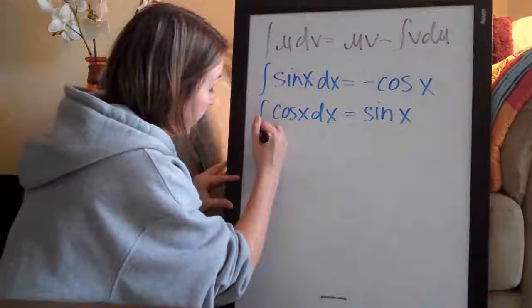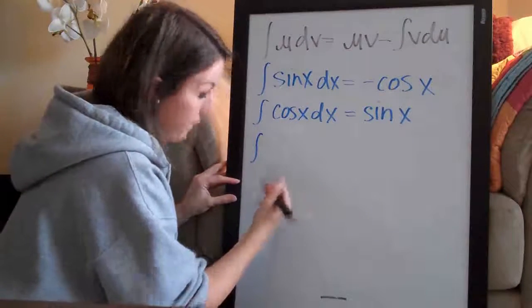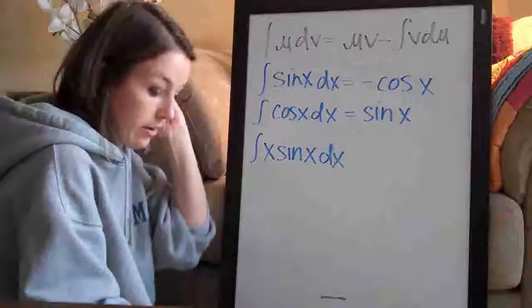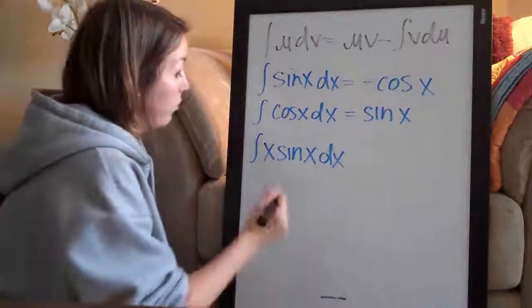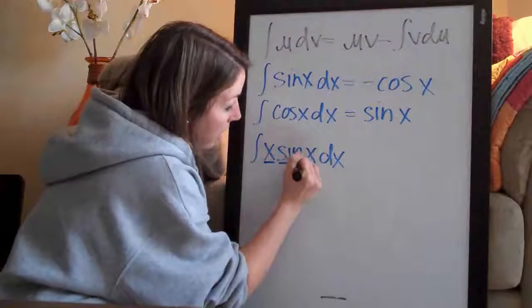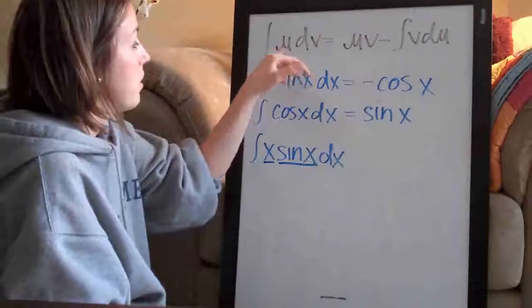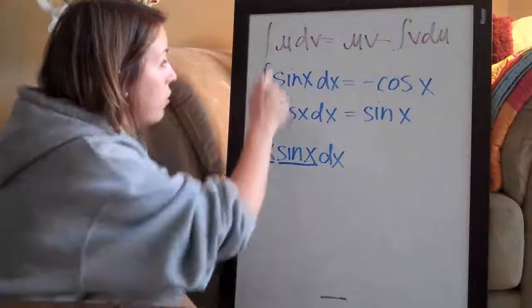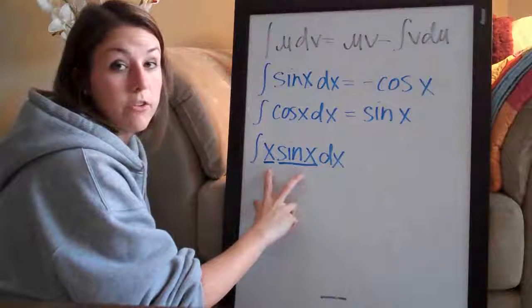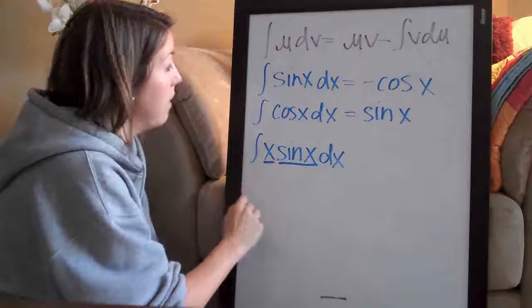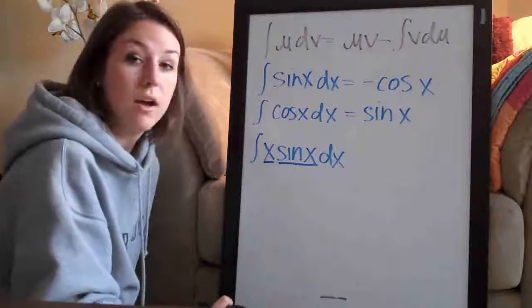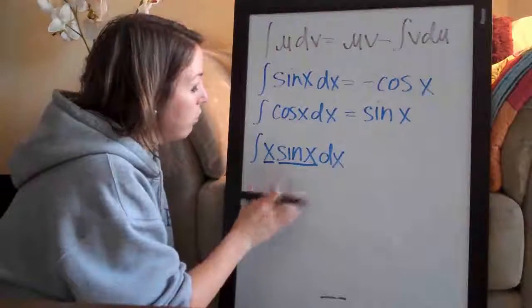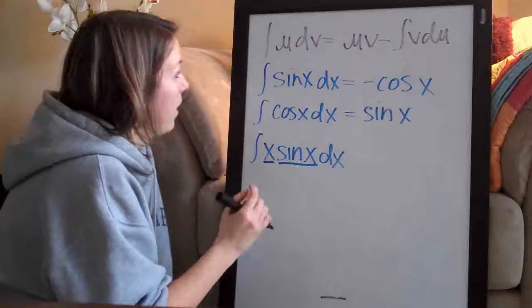The problem that we're looking at is the integral of x sine of x dx, and the reason that this is an integration by parts problem is because we have two terms involved. We've got x, and then we have sine of x, and we have two terms up here, u and dv. So what we need to do first is assign u and dv to these two parts of our function. The way I always advise people to assign u and dv, sometimes it's a guessing game, but what you're looking for is something... I always start with u.